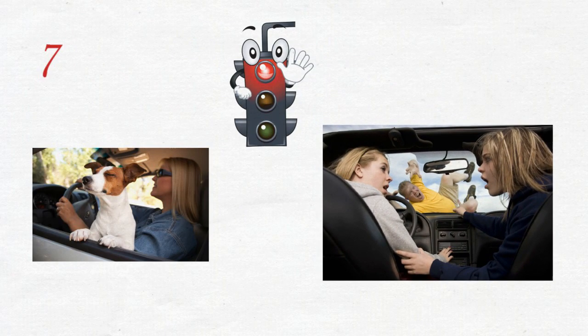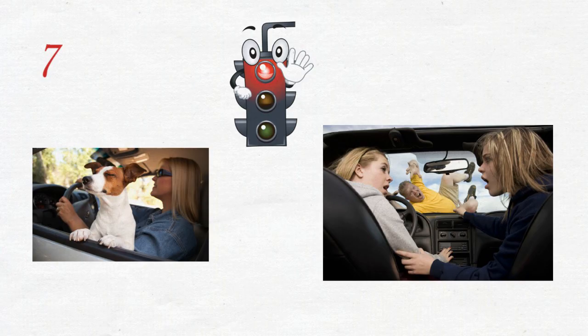7. Pets and Passengers. Having an unconfined pet that can reach the driver is a well-known cause of accidents. Looking at other passengers or having a heated argument with a passenger is distracting and dangerous. You know what your passenger looks like. Keep your eyes on the road and save the arguments for when you're stopped.